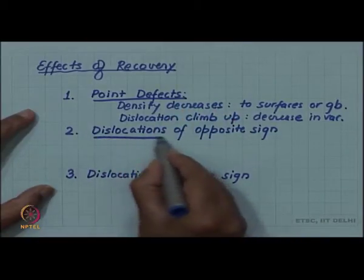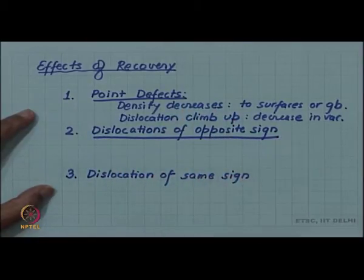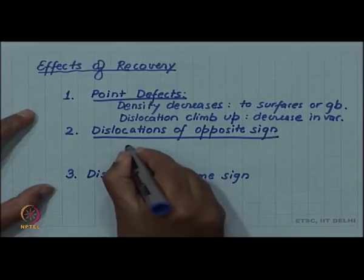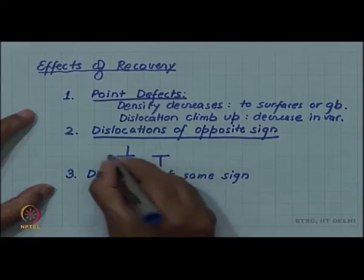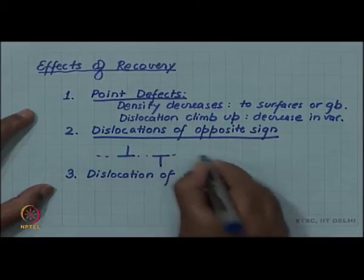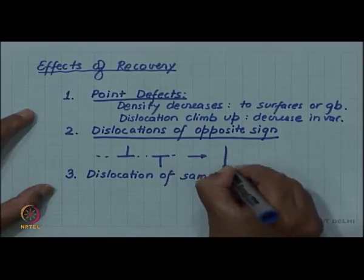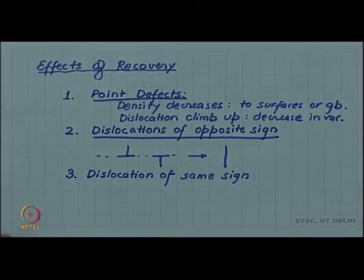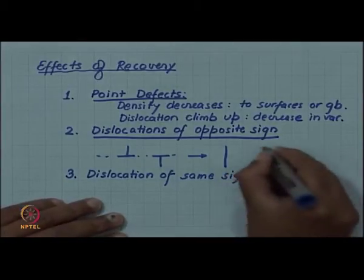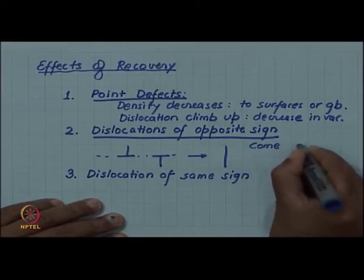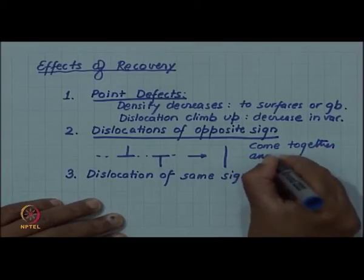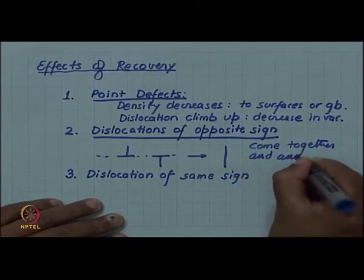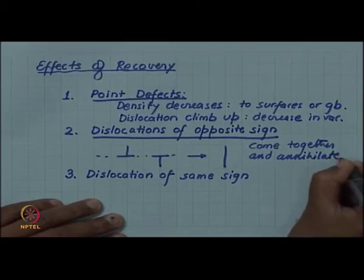Then, dislocations of opposite sign may come together and annihilate. If you have a positive dislocation and a negative dislocation on the same slip plane, they may come together and form a continuous plane, resulting in no dislocation. So, dislocations of opposite sign come together and annihilate.